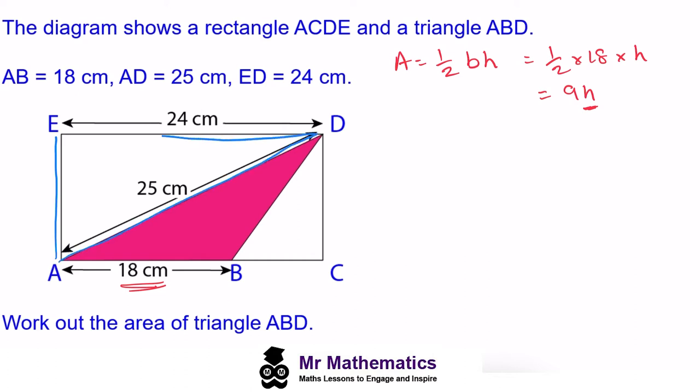To work out A to E, we're going to use Pythagoras' theorem. So we have our right angle triangle where A to E I'm going to call H, the height. E to D we've been given as 24, and A to D we've been told is 25 centimeters.